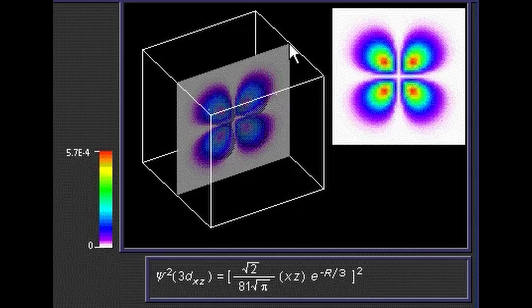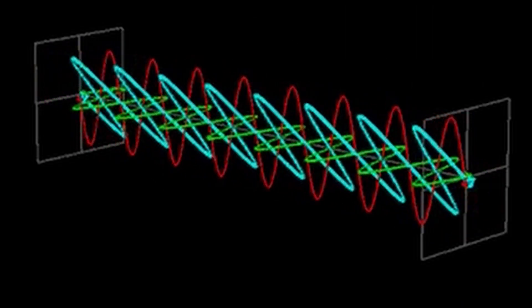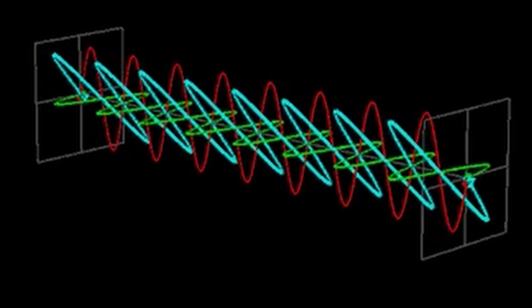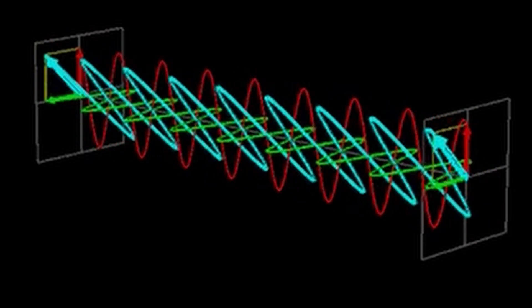In conclusion, the wave function is a mathematical description of the probability of finding a subatomic particle in a particular state at a particular location. It exhibits wave-like behavior and follows the principle of superposition. It plays a crucial role in determining the energy levels of quantum systems and has led to incredible advances in fields such as quantum computing and cryptography.